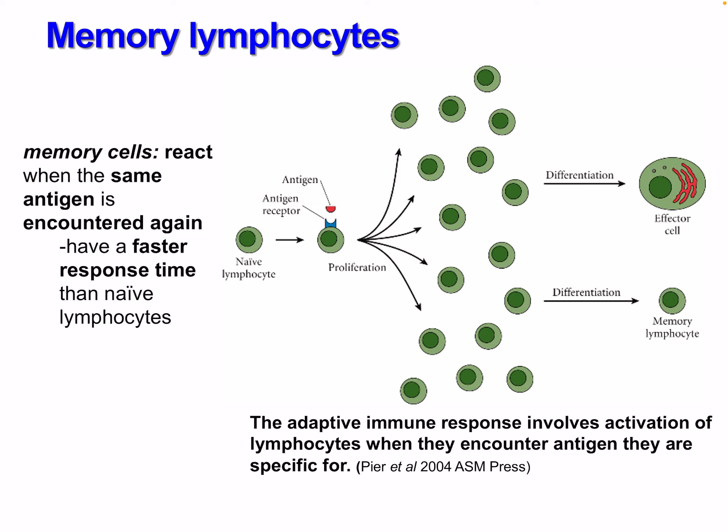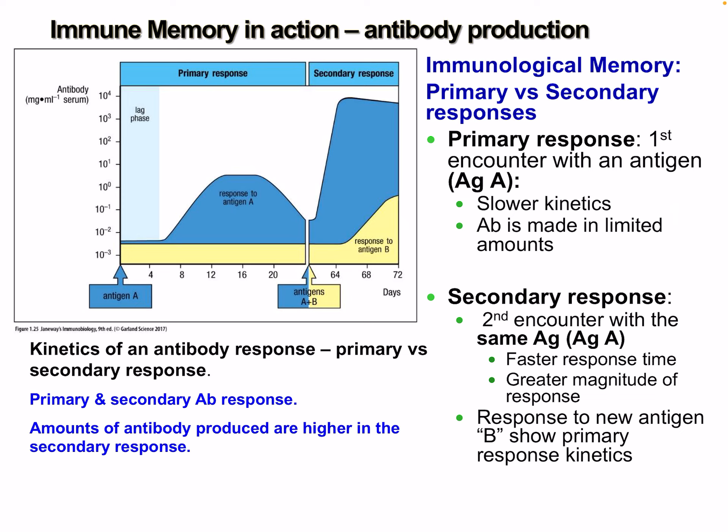Memory cells react when the same antigens are encountered again. You might catch a cold once and then catch it again, but your body deals with it before you even know — because of a faster response time than naive lymphocytes. This is the classic primary versus secondary immune response figure seen in virtually every immunology textbook. The primary response is the first encounter with an antigen: slower kinetics and antibodies made in limited amounts. The secondary response — second encounter with the same antigen — is faster and greater in magnitude.